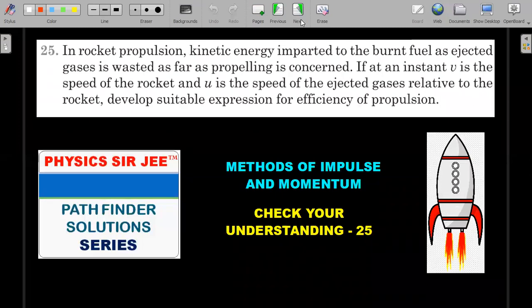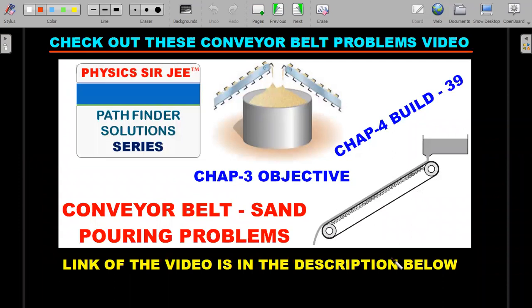Before we move on to the solution, I request you to go through the other video I've produced on the variable mass system. This is an old video in Chapter 3 objective type questions and Chapter 4 Build Your Understanding 39 dealing with conveyor belt problems where sand pours in and out. A nice concept important for JEE Advanced has been discussed there. The link is in the description below or on the i button.